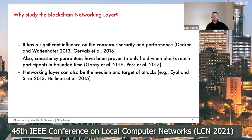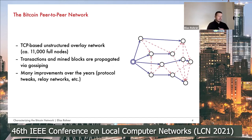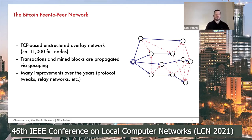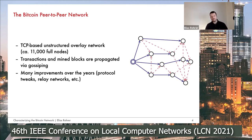Therefore, we think the blockchain networking layer is an often neglected but really important part of blockchain systems. To get a quick understanding of how these peer-to-peer networks typically function: these are classically unstructured overlay networks. In the Bitcoin network, every node establishes a number of TCP connections — by default eight outgoing TCP connections to a random subset of other nodes. This is a tunable parameter and many peers, especially central ones, connect to more than eight peers.